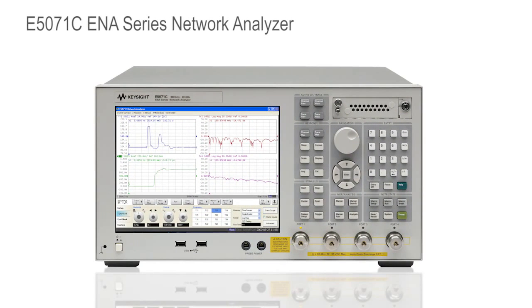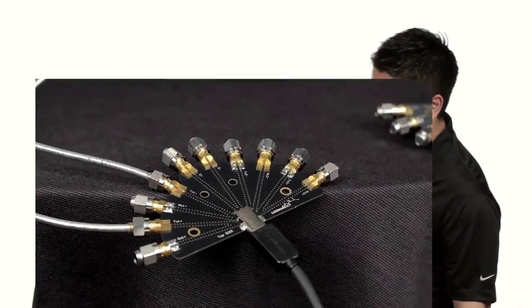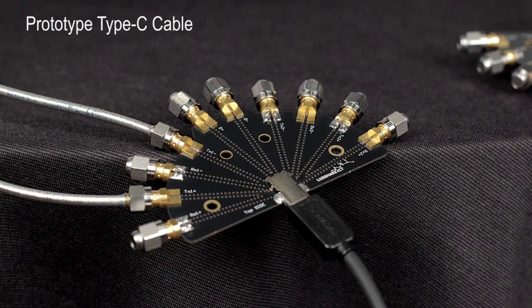What I have here today is our E5071C ENA network analyzer with our TDR option. Connected to the network analyzer is a prototype type C cable.